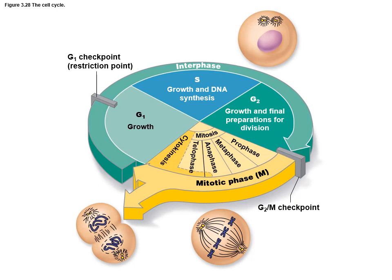All of the other cells in your body — besides the sex cells — will utilize mitosis as a form of cell reproduction. That means you go from one cell to two daughter cells that are identical in genetic material. So you go from one cell with 46 to two cells with 46 chromosomes each as their daughter cells. In order to do that, we have to double our DNA, and that's going to happen during the S subphase of interphase.